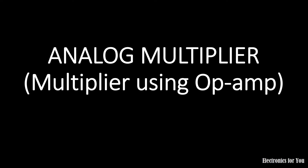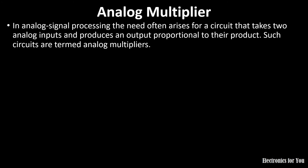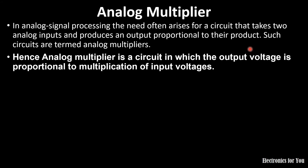In this video we will understand analog multiplier using op-amp. In analog signal processing, sometimes we need a circuit that takes two inputs and produces an output proportional to their product. Such a circuit is termed an analog multiplier. An analog multiplier is defined as a circuit in which the output voltage is proportional to the multiplication of input voltages.